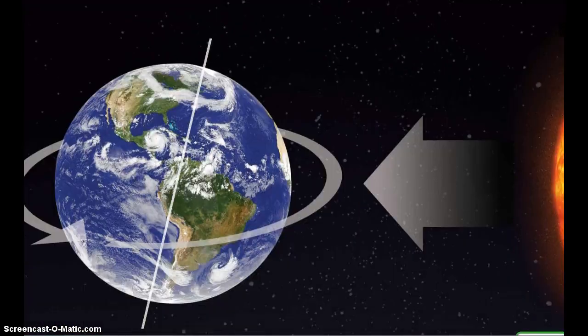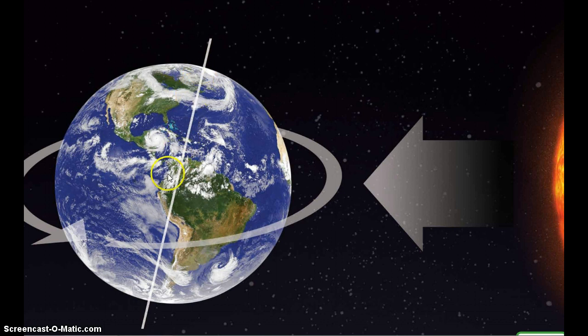As we look at a picture of our Earth, can you tell where the axis is? The axis goes from the north pole through to the south pole.